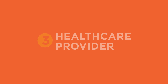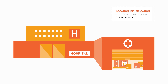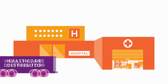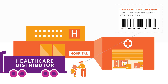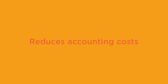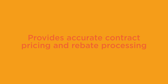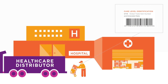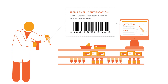At the healthcare provider, GTINs and SSCCs are used at the point of receipt to validate delivery accuracy. GTINs and internal hospital GLNs are used to put products into inventory. This improves internal distribution processes, reduces accounting costs, maintains chain of custody through automated processes, and provides accurate contract pricing and rebate processing.